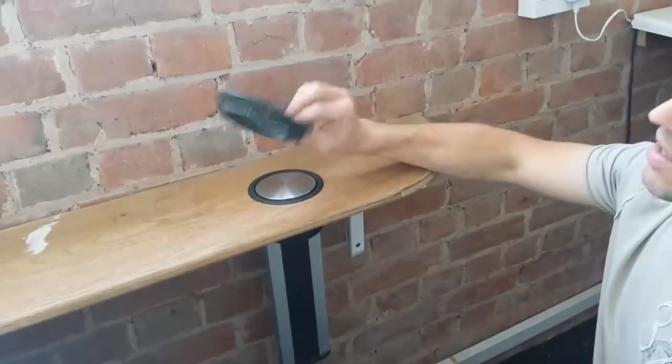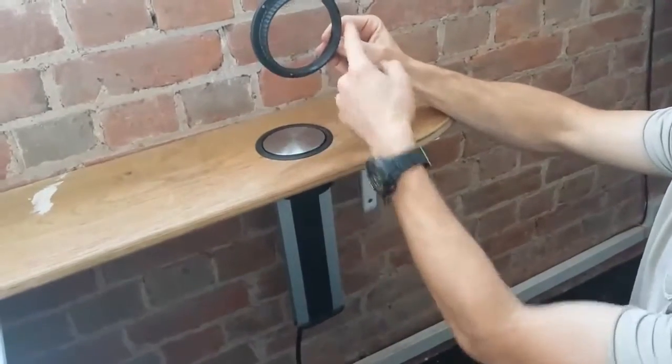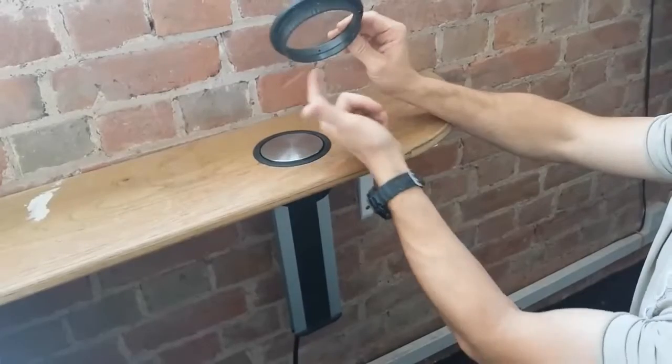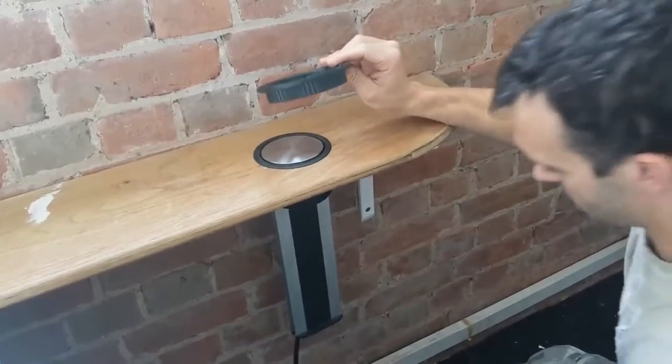We're going to take this retaining nut which goes underneath. As you can see, there are three holes in here. Once this screws up onto the underside, we can place the three small screws that we supply into the underneath of the worktop to stop it spinning around.